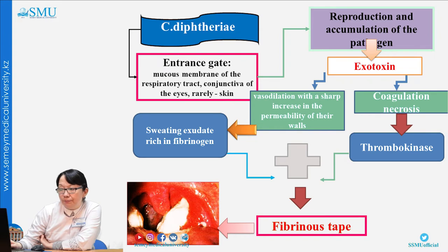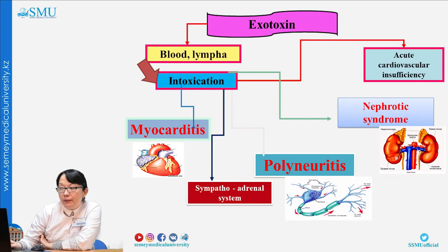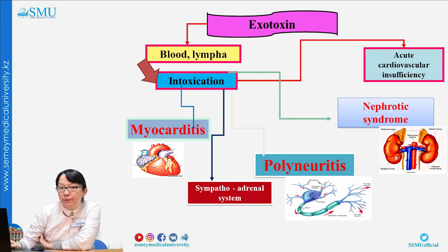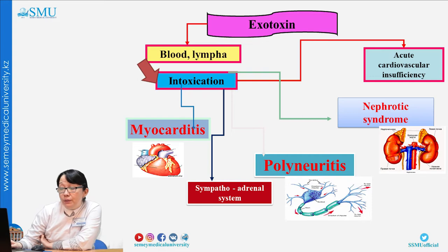Finally, we can see fibrinous pseudomembranes (plugware) on the tonsils, mucous membranes, eyes, and skin. Exotoxin from the respiratory tract enters the blood and lymph, causing toxinemia. Clinically, this produces intoxication of three target organs: heart, nervous system, and kidneys. The main specific complications of diphtheria are myocarditis, polyradiculoneuritis, and nephrotic syndrome.